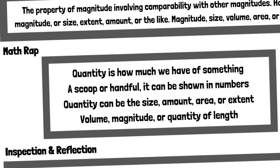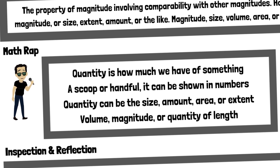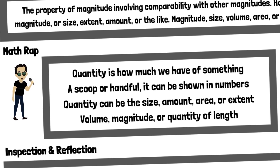Math Wrap. Quantity is how much we have of something — a scoop, or handful. It can be shown in numbers. Quantity can be the size, amount, area, or extent, volume, magnitude, or quantity of length.